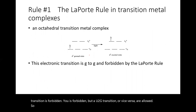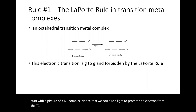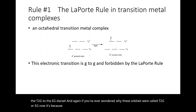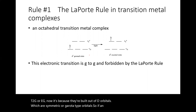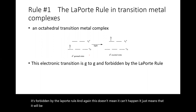In an octahedral complex, consider a d1 complex: we could use light to promote an electron from the t2g to the eg* set. The reason these orbitals are called t2g or eg is because they are built from d orbitals, which are symmetric or gerade-type orbitals. So an electron going from t2g to eg* is forbidden by the Laporte rule — this doesn't mean it can't happen, but it will be a relatively unintense transition because epsilon will be small.